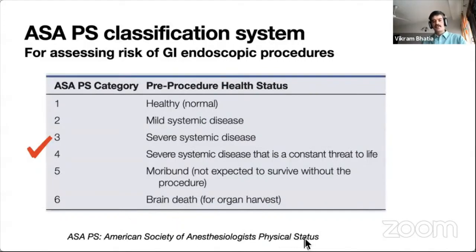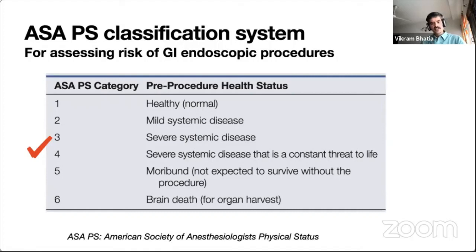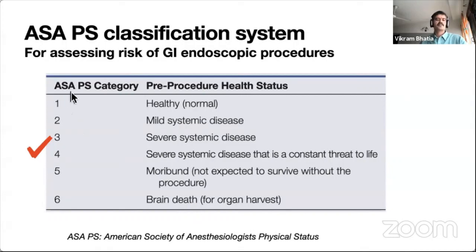The ASA Physical Status score is important for GI fellows to know when performing endoscopy or procedures. ASA 1 is a healthy patient; ASA 2 is mild systemic disease such as diabetes; ASA 3 is severe systemic disease — CAD, angina, on aspirin; ASA 4 is severe systemic disease that is a constant threat to life — recent acute coronary event or congestive heart failure; ASA 5 is moribund and ASA 6 is brain death. Our patient would be ASA category 3 or 4.